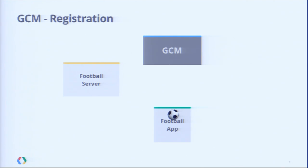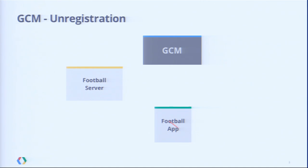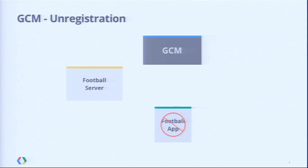Let's say for some unknown reason our users want to uninstall our app. The GCM server doesn't know yet that the app is gone. So when the football server sends a message, the GCM framework on the device realizes the app is gone, heads back to the server, and invalidates this address. From this moment on, every message the football server sends bounces back with an error: 'device not registered.' If you get this error, it's a good idea to remove that registration ID from your database.